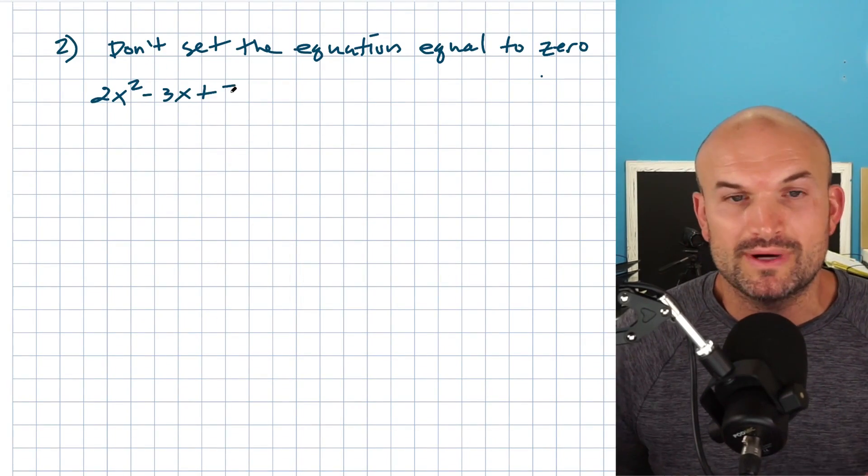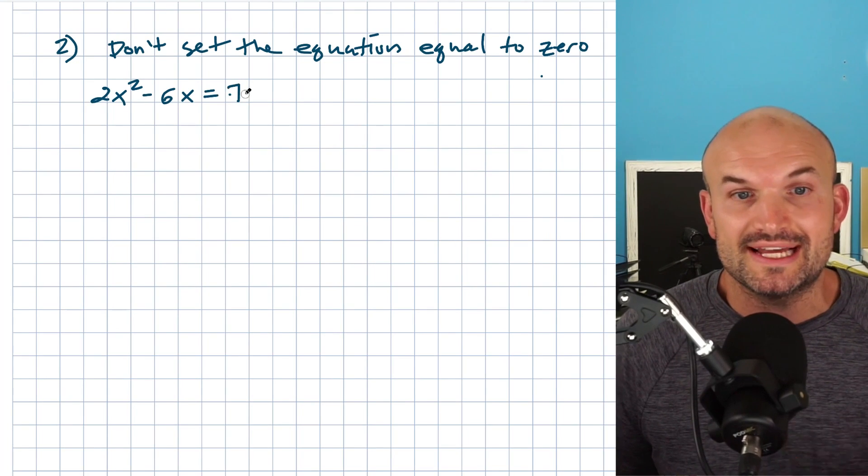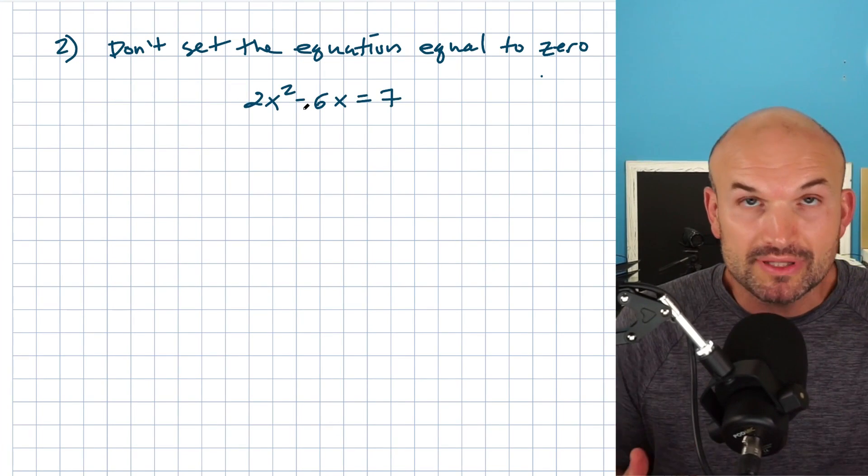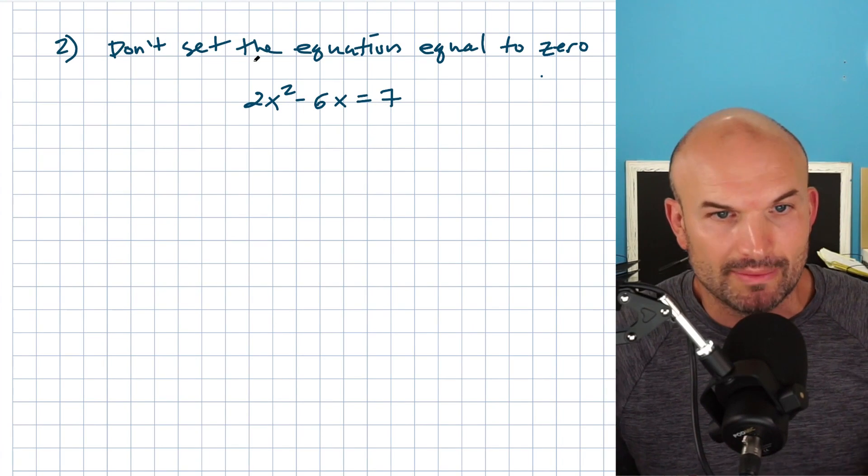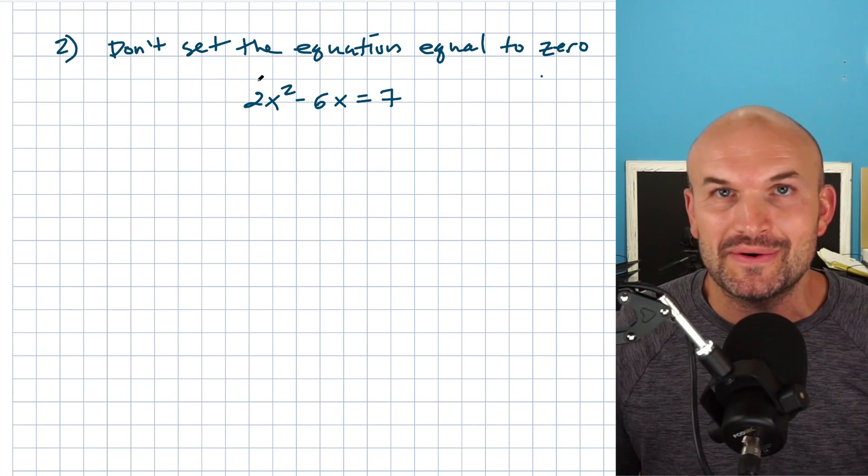So in this example, there's kind of two different ways students will make mistakes sometimes if they don't set it equal to zero. Again, the way to properly do this is set it equal to zero and then look to factor or apply the quadratic formula. You could also do completing the square, but I like to focus on those two.